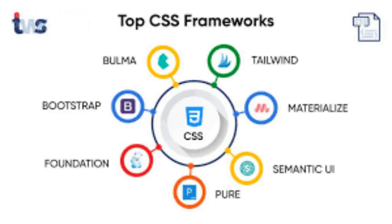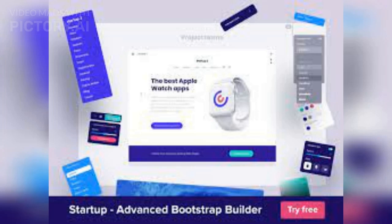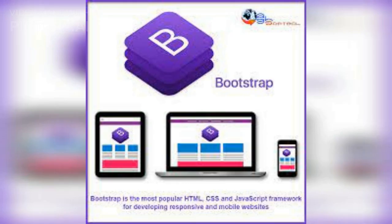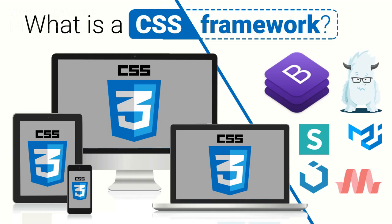Fifth, Align Items: specifies how flex items are aligned along the cross axis, the axis perpendicular to the main axis. It can be used to align items at the start, center, end, or stretch them to fill the container. Sixth, Flex Wrap: determines whether flex items should wrap to multiple lines when there is not enough space in the flex container. Seventh, Flex Flow: a shorthand property that combines the flex-direction and flex-wrap properties.